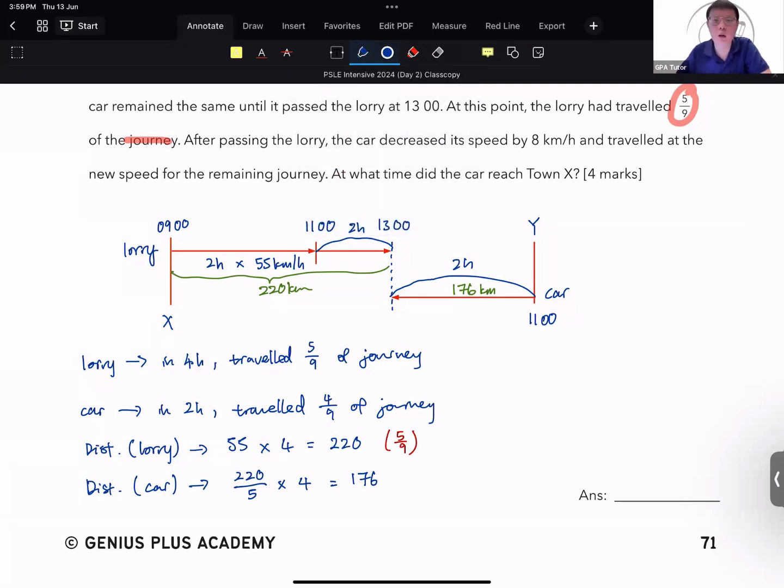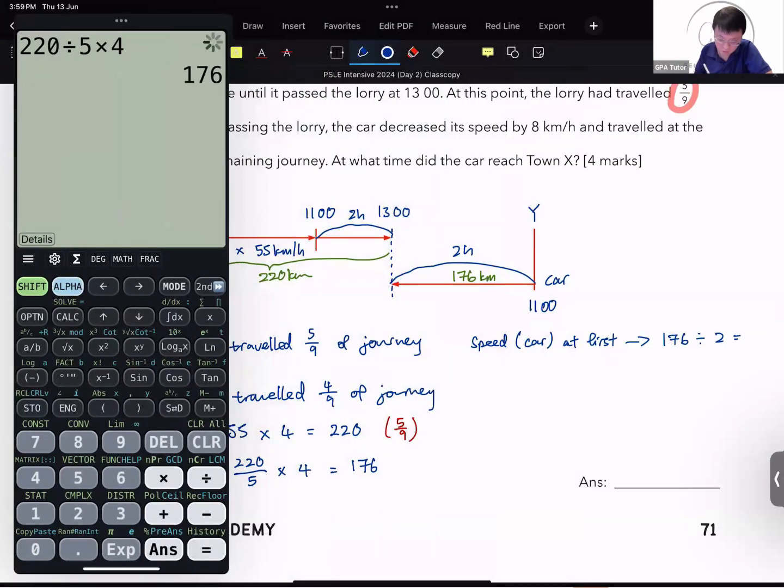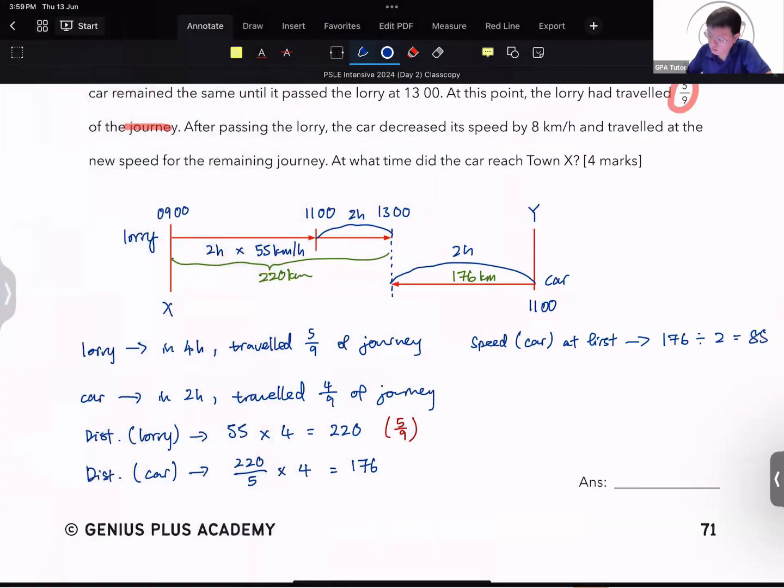So after passing the lorry at 1 o'clock, the car decreases speed by 8 km per hour. So obviously, the first thing we need to find here is the speed of the car at first. Which is 176 km divided by 2 hours to give me 88. And then now they tell you that the speed of the car after passing decrease by 8 km. So 88 minus 8 to give me 80 km per hour.